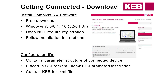Getting connected — you've got the right cables, now you want to download the software to your computer. You can just go to our website and follow the link for software. It's available for Windows 7, 8, and 10, and it works on Microsoft tablets as well, as long as they're running Windows. Just follow the installation instructions. The only thing you'll need to contact me or someone at KEB about is the configuration IDs — we don't host those on our website. It's just an XML file you put in a folder, and it allows you to actually see the parameters. Without that XML file, you won't be able to see the parameters.